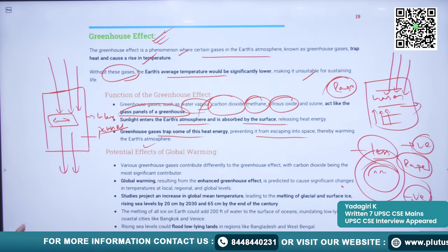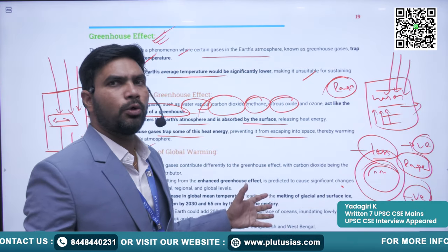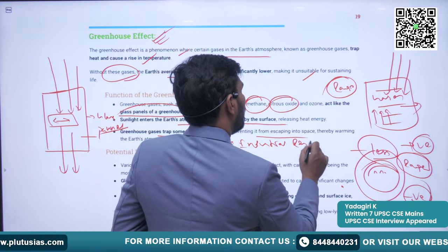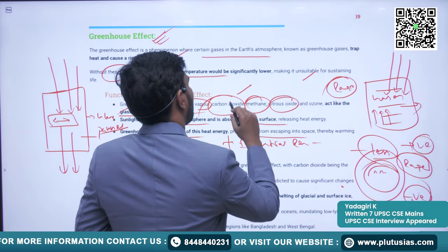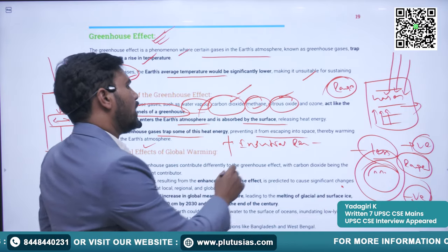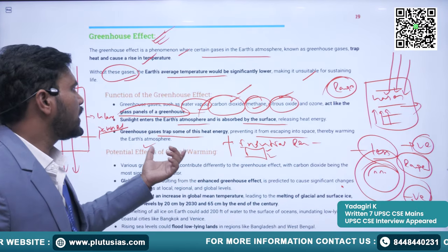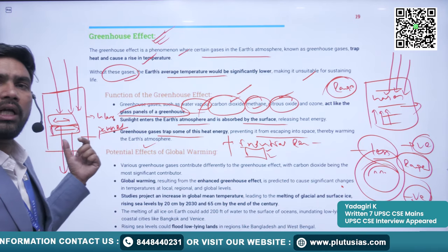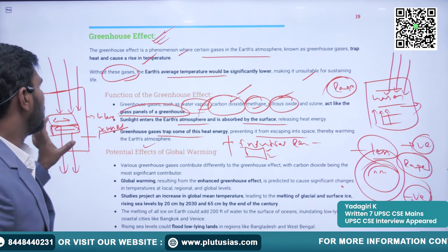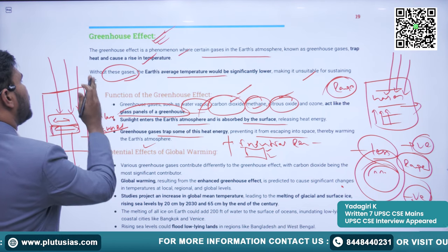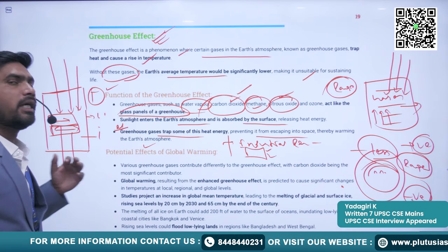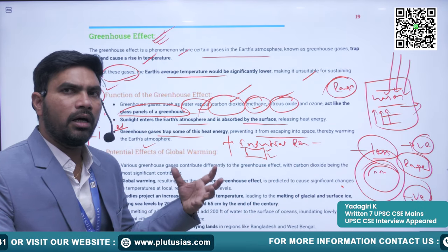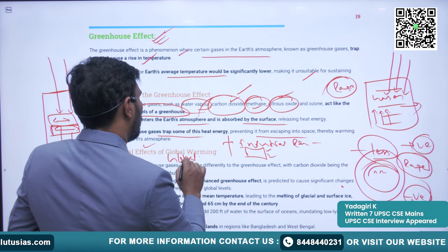After the industrial revolution, the quantity of greenhouse gases — especially carbon dioxide, methane, and nitrous oxides — has increased a lot. Because of this, they are trapping more radiation and heat than the earth requires, causing the average temperature of the earth to increase. This phenomenon is called global warming.